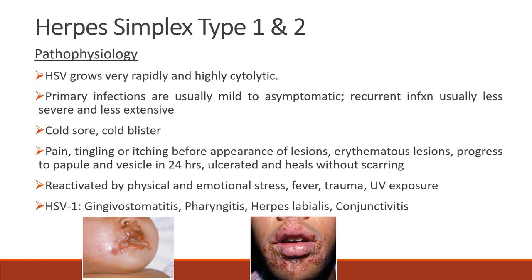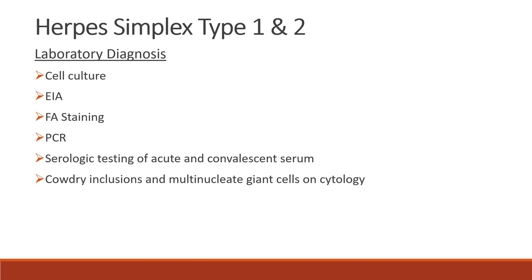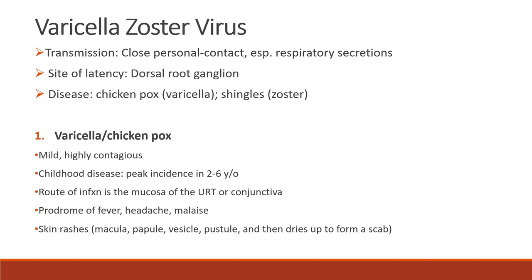Lesions progress to papule and vesicle in 24 hours, then ulcerate and heal without scarring. This can be reactivated by physical and emotional stress, fever, trauma, and UV exposure. For herpes simplex virus type 1, this can cause gingivostomatitis, pharyngitis, herpes labialis, and conjunctivitis. For laboratory diagnosis, we can have cell culture, enzyme immunoassay, fluorescent antibody staining, PCR, serologic testing of acute and convalescent serum, and Cowdry inclusions and multinucleate giant cells on cytology.